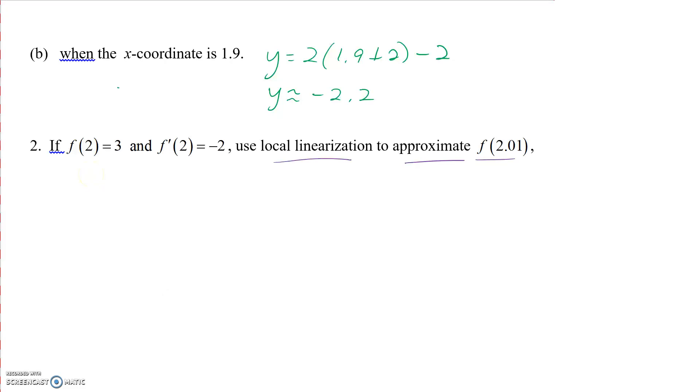We do know that this gives me a point (2, 3), and this tells me that my derivative at x = 2 is -2. So that's the slope of my tangent line. I can come up with my equation of the tangent line.